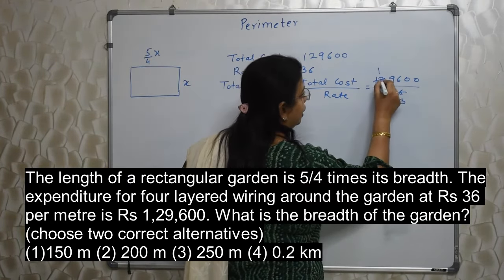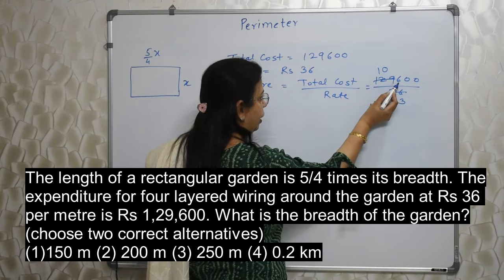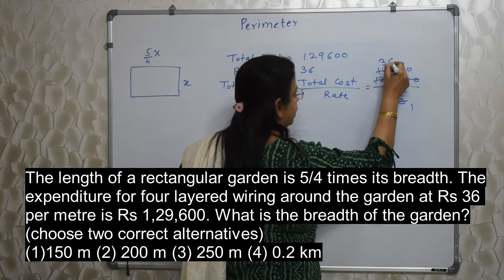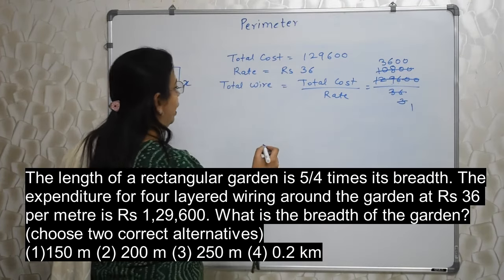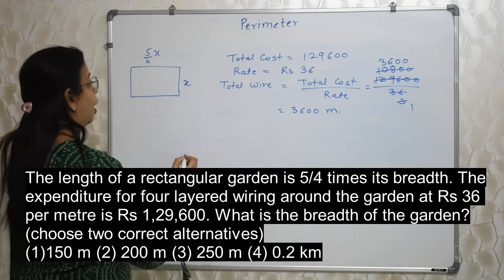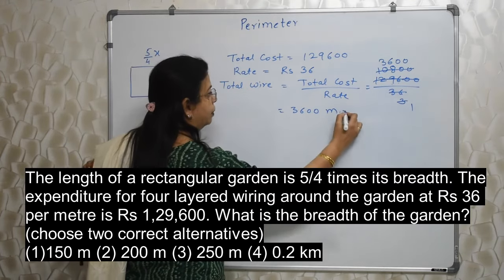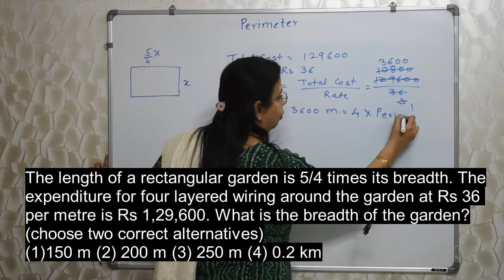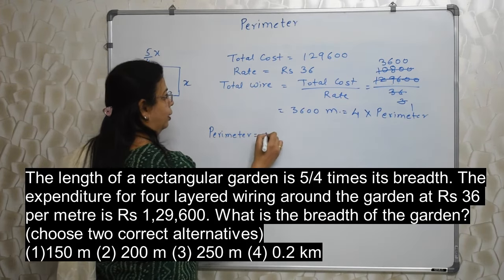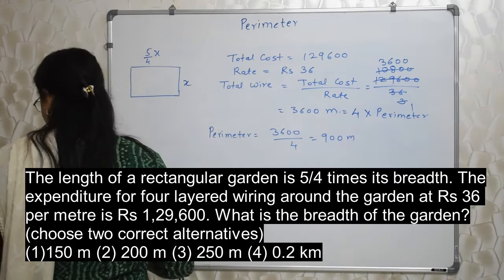Calculating: 1,29,600 divided by 36 equals 3600 meter. Total wire required is 3600 meter. Why so much wire? Because they want 4 layers. So 3600 equals 4 times perimeter. To find out the perimeter: 3600 divided by 4, that is 900 meter. So 900 meter is the perimeter.